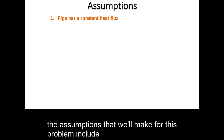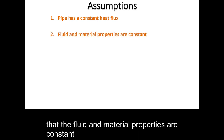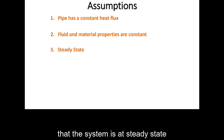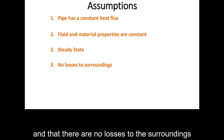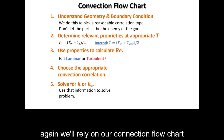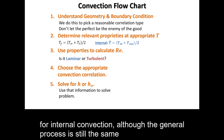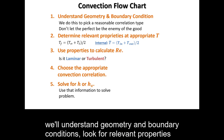The assumptions for this problem include: constant heat flux at the pipe wall, constant fluid and material properties, steady-state conditions, and no losses to the surroundings. We'll rely on our convection flowchart, which has been slightly modified for internal convection, though the general process remains the same.